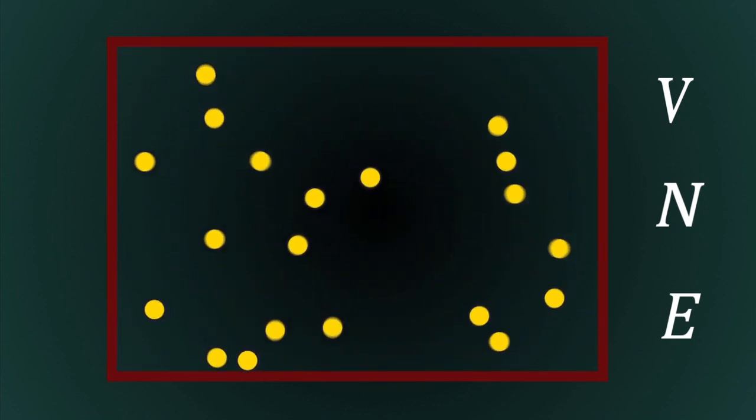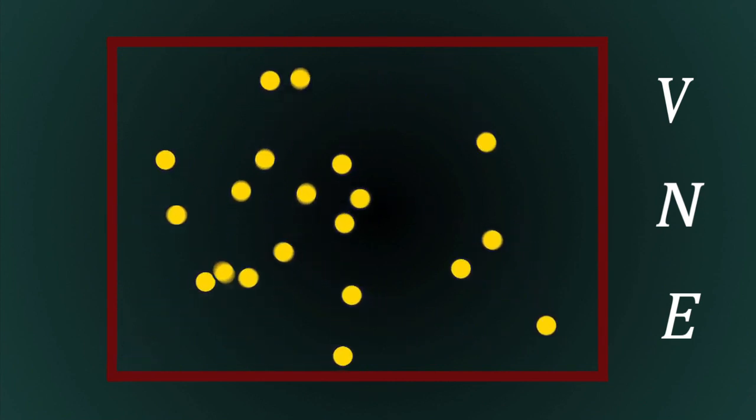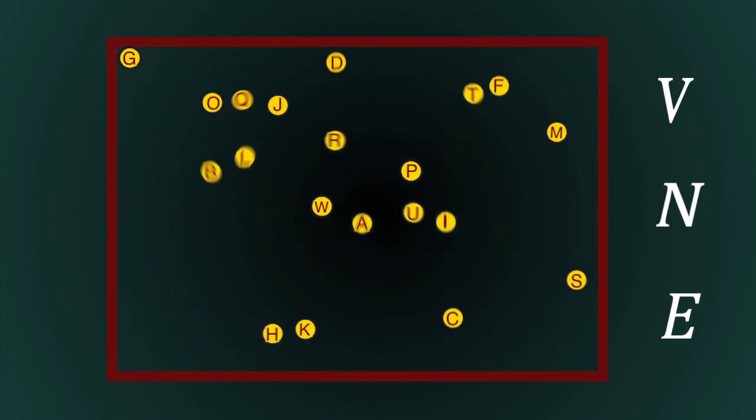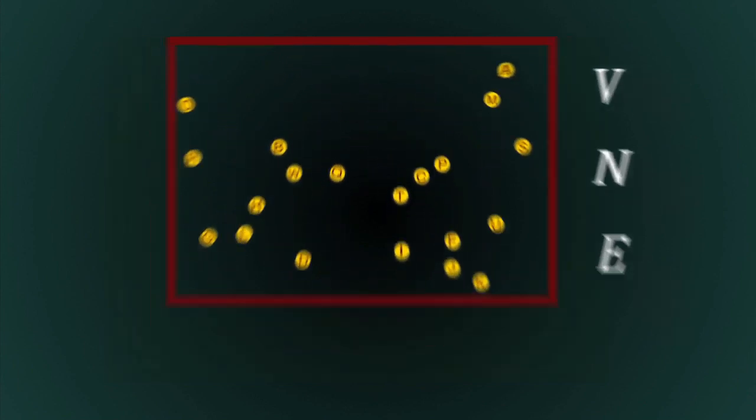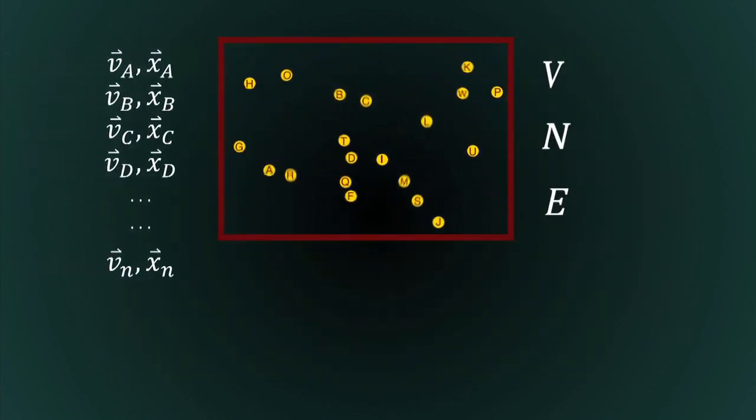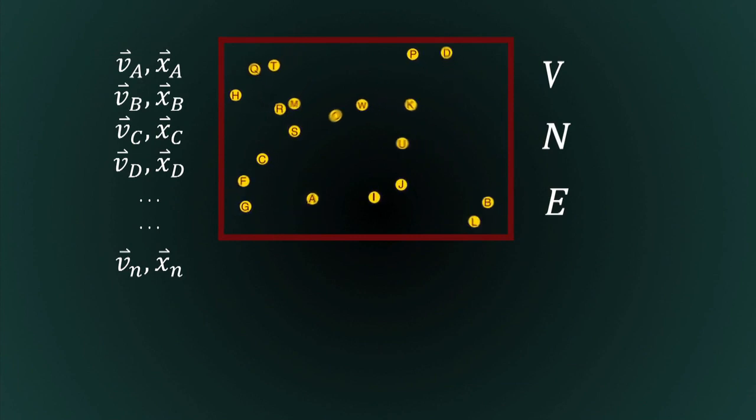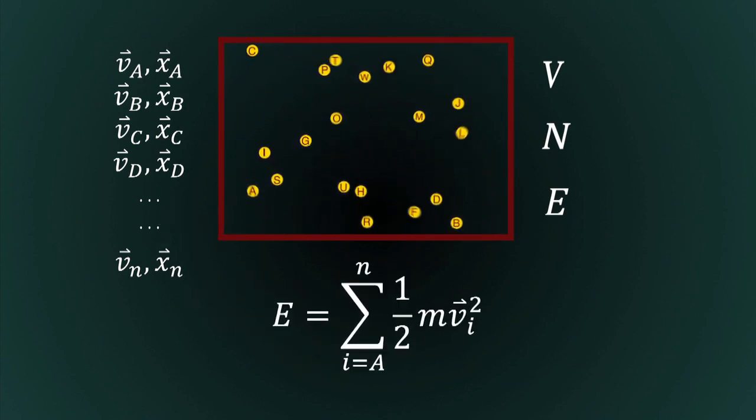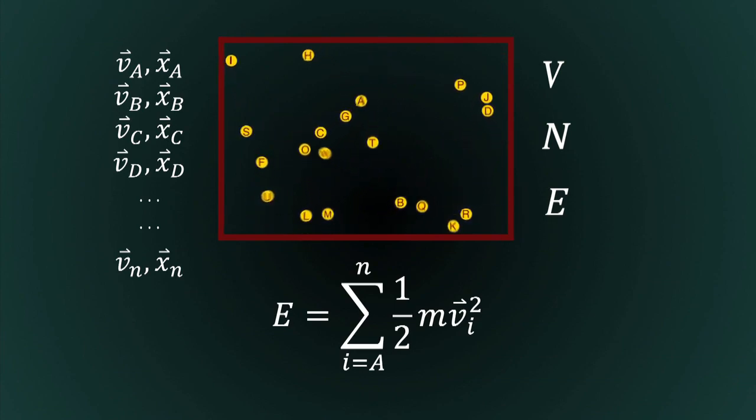Thus, a microstate that corresponds to such a macrostate is the velocity and position of each particle in the box. With this information, we can determine the movement and position of every particle in the box, and we obtain the total energy as one-half mv squared summed over all particles. As you can imagine, measuring changes in the system by tracking each and every microstate would be a computational nightmare.